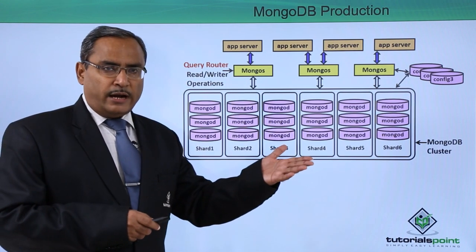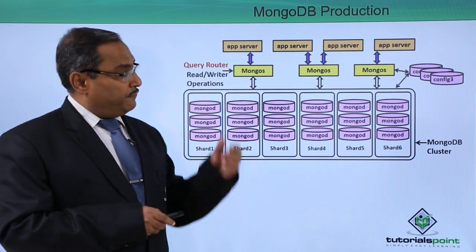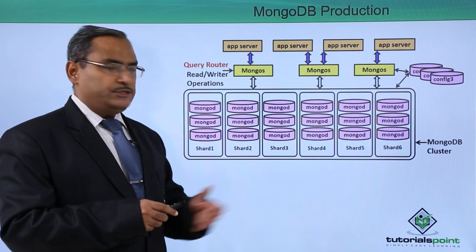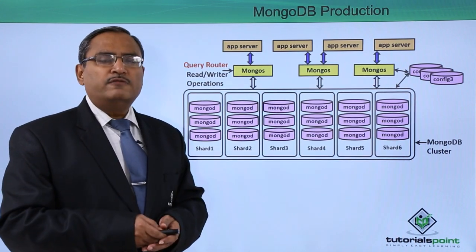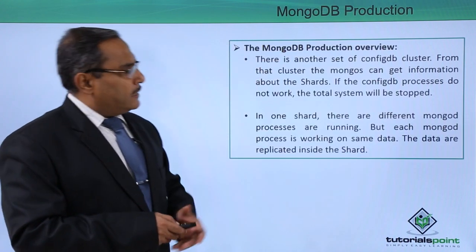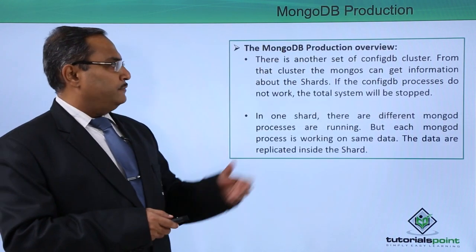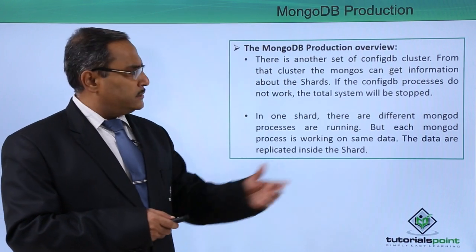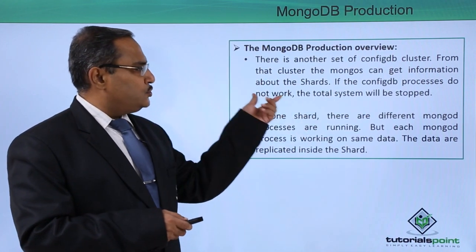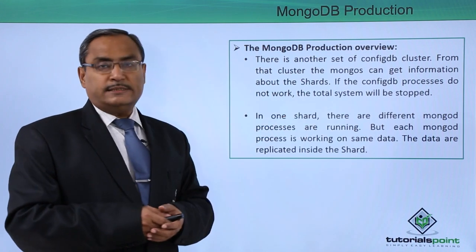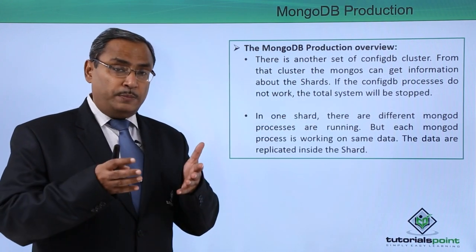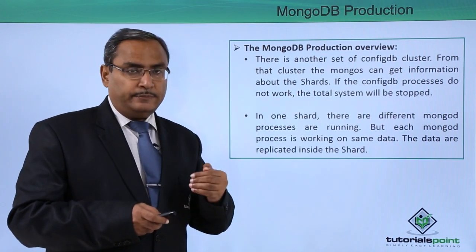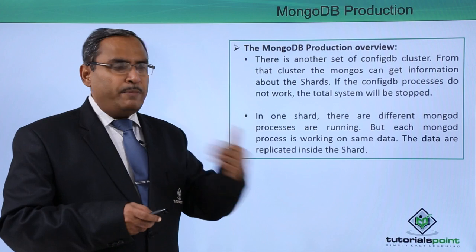Another process running is the ConfigDB. From the ConfigDB we will be getting the metadata about the data. There is another set of MongoDB cluster from which Mongos can get information about the shards. If the ConfigDB process does not work, then the total system will be stopped, because ConfigDB is the very process which is actually providing the information about the metadata.